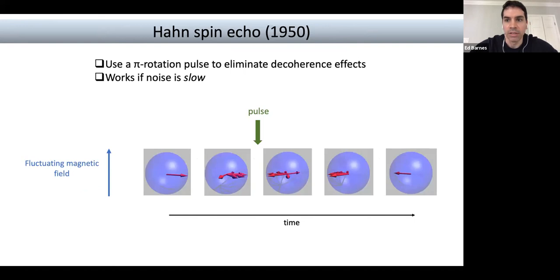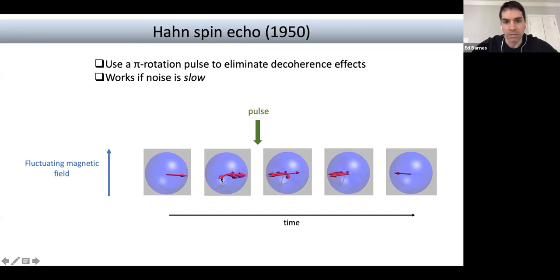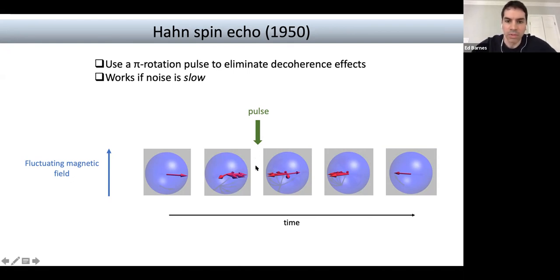This is an old idea dating back to the 1950s. The first example is called Hahn spin echo, where you have a single spin experiencing a fluctuating magnetic field. If you run the experiment multiple times and stop at some final time, you end up with spin vectors pointing in various directions. But Hahn showed that if you apply a strong pulse halfway through the evolution, you instantaneously flip all the spins, and after waiting the same amount of time, all the spin states coalesce again — you can restore the signal.